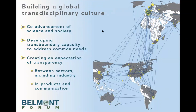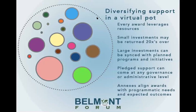The Belmont Forum has goals of co-advancement of science and society, developing trans-boundary capacity to address common needs, and creating an expectation of transparency between sectors. The map on screen shows all the countries that have participated in Belmont Forum calls. Every team that successfully acquires Belmont Forum resources must include principal investigators from at least three Belmont Forum countries — every funded project is a trans-boundary project.